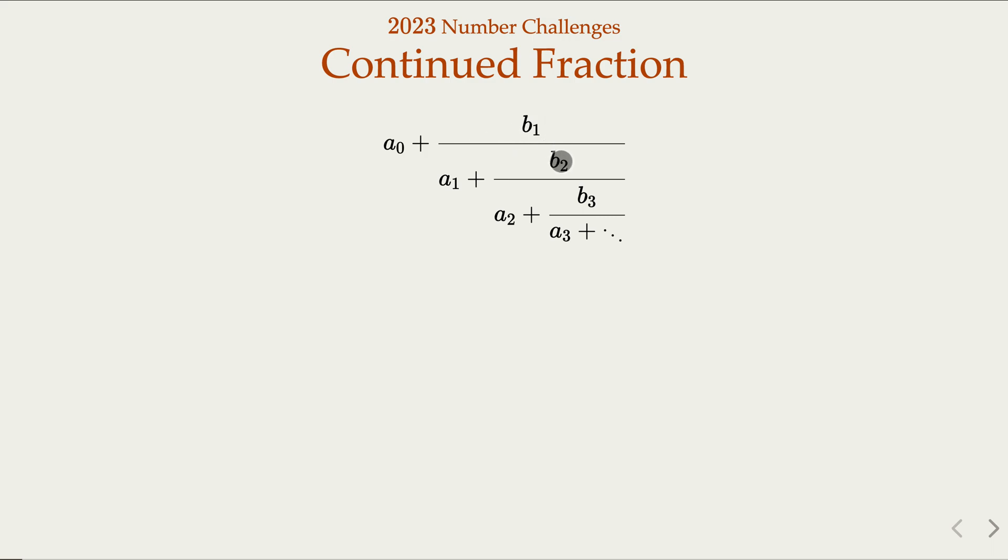A continued fraction is in this format where a_0, b_0 are sometimes integers, sometimes could be complex numbers. In this case, we're interested in what is called a simple continued fraction, where all the b_1, b_2, b_3 are one, integer one. So b_i equal to one would be a simple continued fraction.